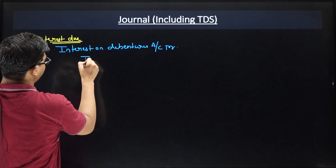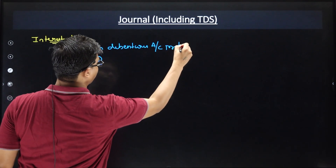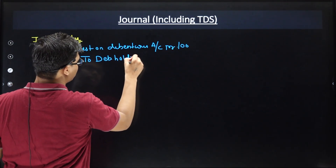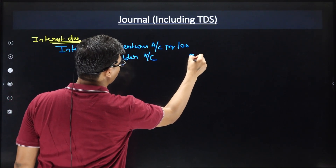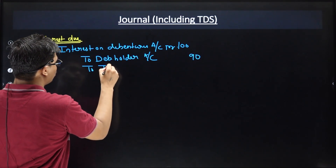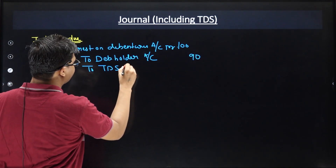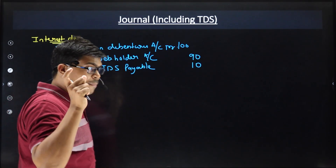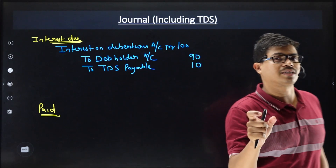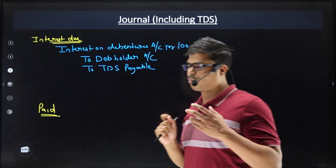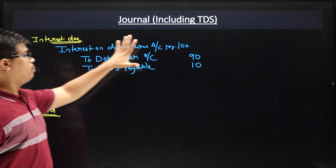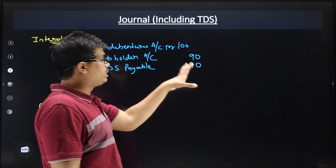When interest is due, pass the following journal entry. Interest on Debentures Account — Debit, for the full interest amount, say 100 Rs. To Debenture Holder Account — Credit 90 Rs. To TDS Payable Account — Credit 10 Rs. So whatever interest there is, 10% TDS is deducted. Apply the percentage given in the book.